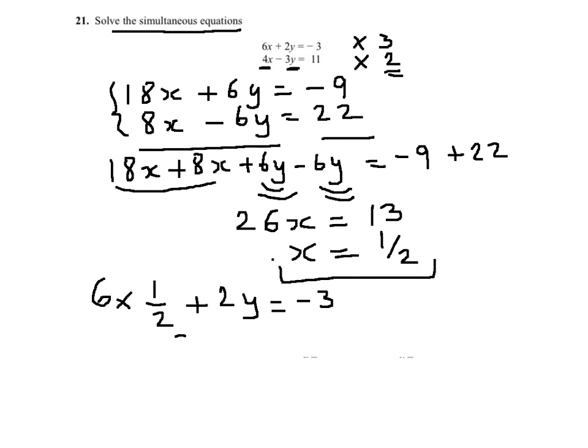This in turn will give me 3 plus 2y equals minus 3. And if I take 3 on both sides, I will get 2y equals minus 6, and that will give me y equals minus 3.